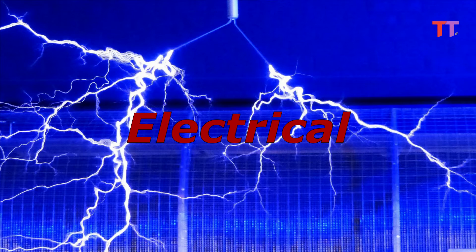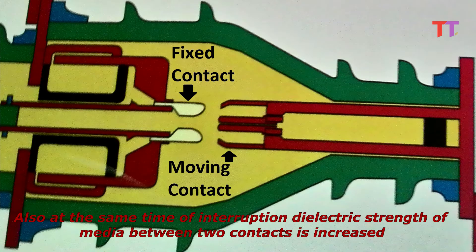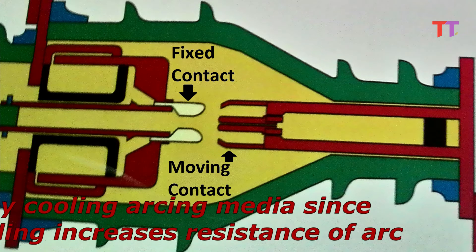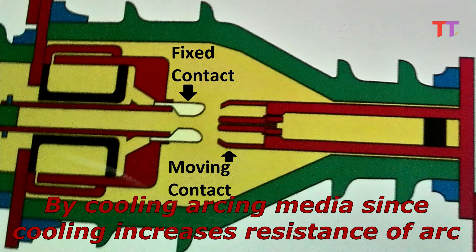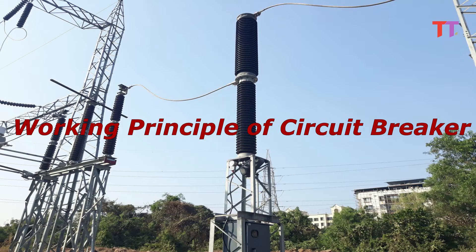Now the electrical aspect of the working principle. Since the purpose of a circuit breaker is to minimize arc formation, current interruption is done at the time the current crosses zero during its cycle. Also at the same time, the dielectric strength of the media between the two contacts is increased. This is done by compressing the ionized arc, since compression accelerates de-ionization, by cooling the arcing media — as cooling increases resistance of the arc — or by replacing ionized arcing media with fresh gases.